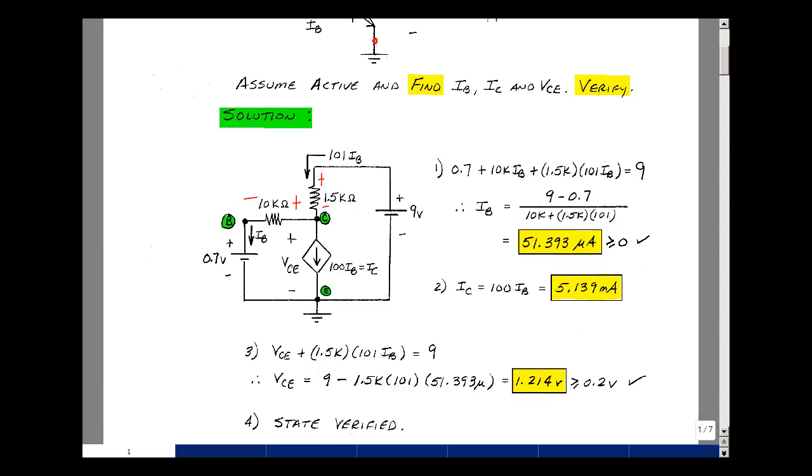So my assumption of being in the active region is correct. The base current is greater than or equal to 0. And the collector emitter voltage is greater than or equal to VCE sat, which is equal to 0.2.